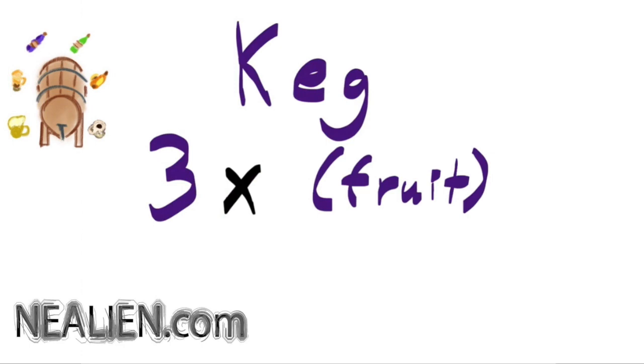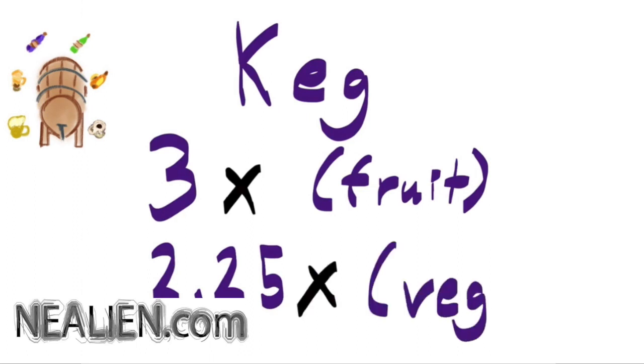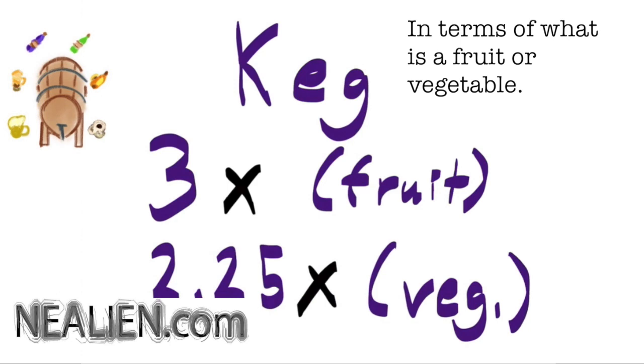So 3 times if it's a fruit, and then 2.25 times x if it's a vegetable. And you have to be maybe aware of how things are classified. There's a few things that you might be surprised about. So we've got three equations: one equation for the preserve jar and two different equations for the keg.